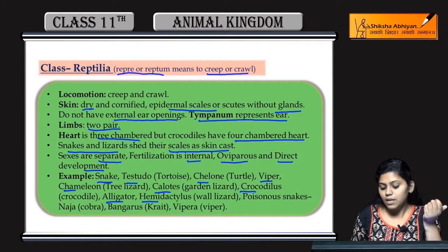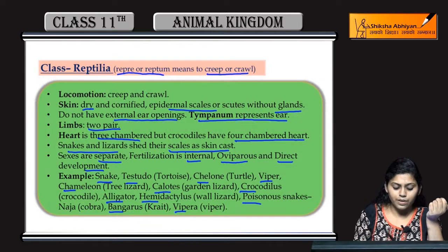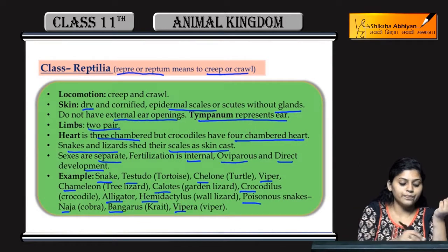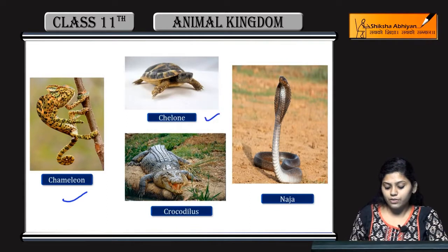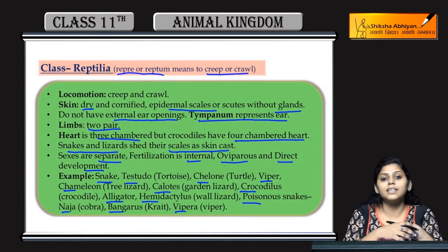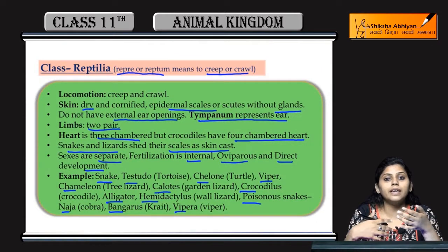Hamidactylus, poisonous snakes — Bungarus, viper, and Naja. So chameleon, crocodylus, and Naja — these are the examples of Class Reptilia. Yeh sab features the Reptilia ke.